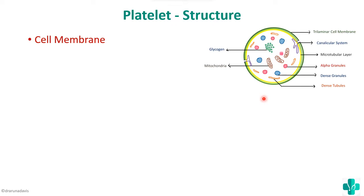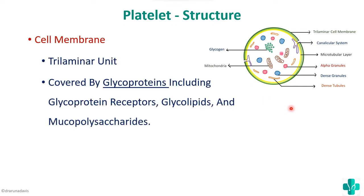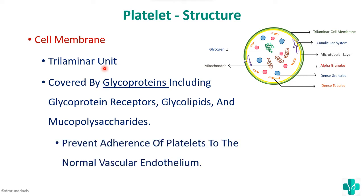Regarding the cell membrane: it has a trilaminar structure and is covered by glycoproteins. These glycoproteins are important for platelet function, and they also help prevent the adherence of platelets to the normal vascular endothelium. So glycoproteins prevent adherence of platelets to the normal vascular endothelium.